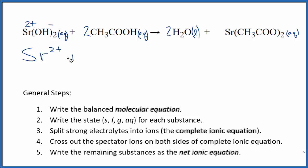I'll write the states later. And then we have two of these hydroxide ions here. So 2OH-. For the acetic acid, we said it's a weak acid, so it's a weak electrolyte. We don't split weak electrolytes apart into their ions. So we're going to just keep this as 2CH3COOH.